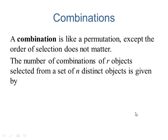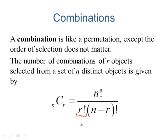The number of combinations of r objects selected from a set of n distinct objects is given by this formula. Notice it's pretty much the same formula as we just saw for permutations, except it has that extra r factorial in the denominator.